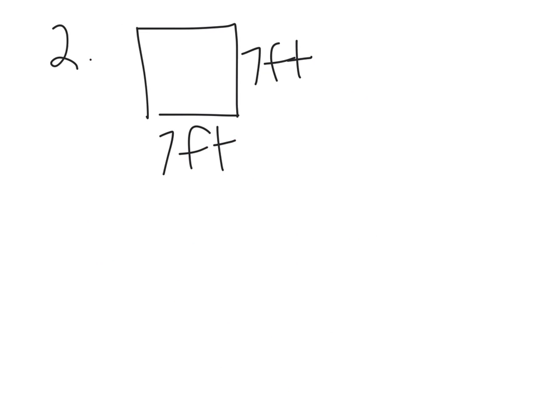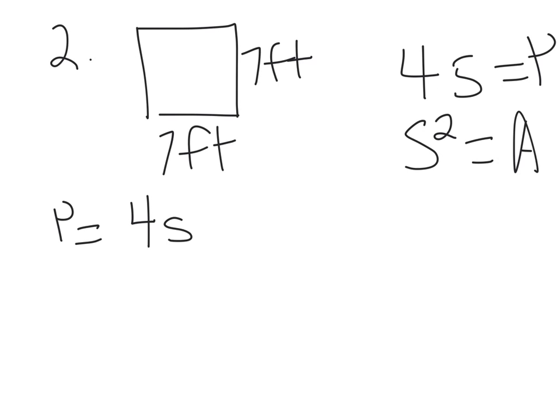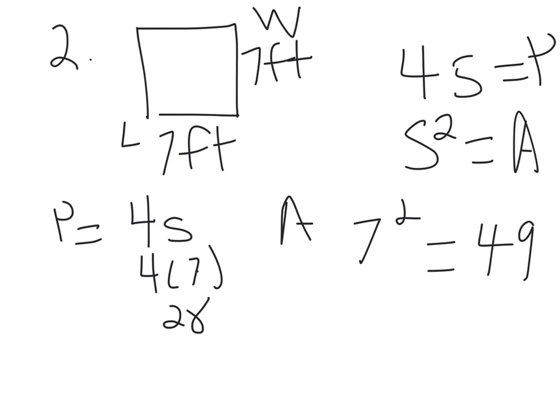Here we have a square. We can look back over on our notes and see what we do with the square. That one is going to be 4S for P, and the area is going to be S squared equals A. We'll do P equals 4S. The perimeter, if we have 4 times 7, P is going to equal 28. If we wanted to find the area, that formula would be 7 squared, and that would equal 49.